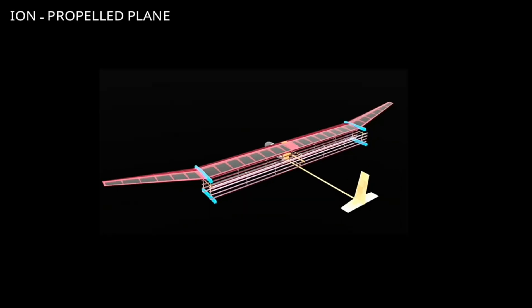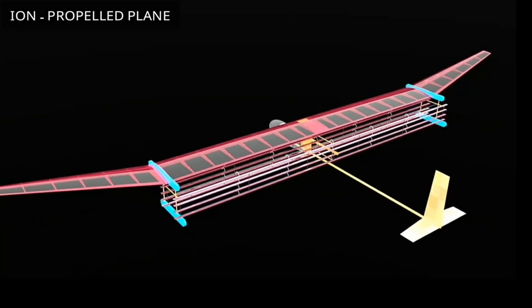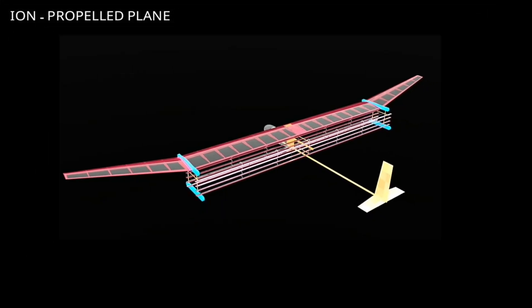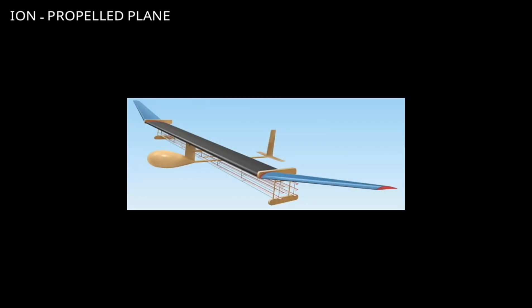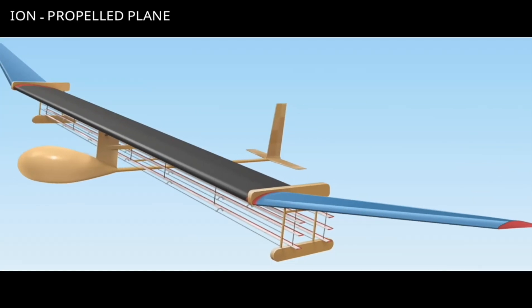The wing is strung with wires like horizontal fencing. Lithium batteries in the fuselage supply current to the wires. The battery supplies a positive charge to the wires along the front and the bottom of the wing, while the wires along the trailing edge of the wing act as negative electrodes.